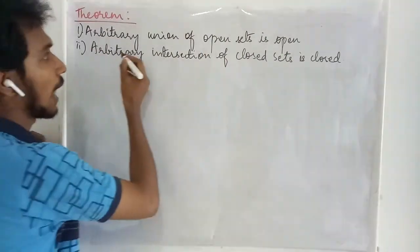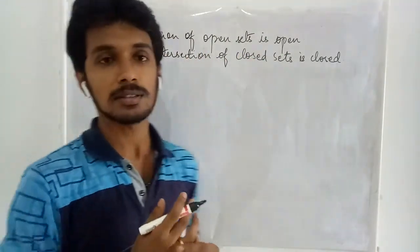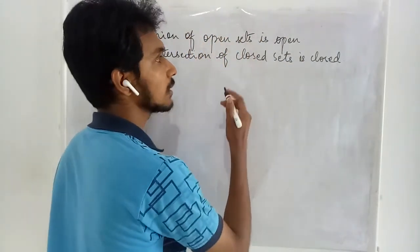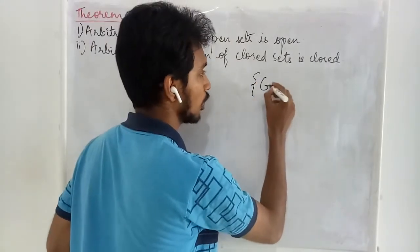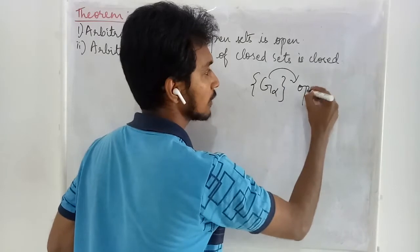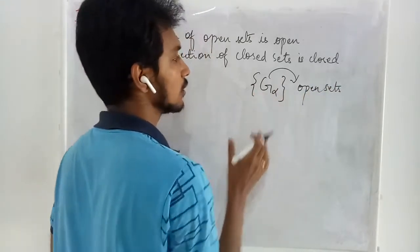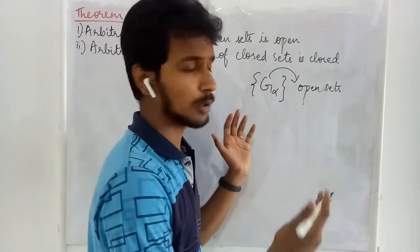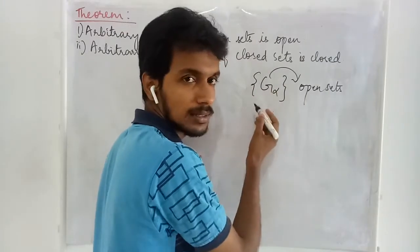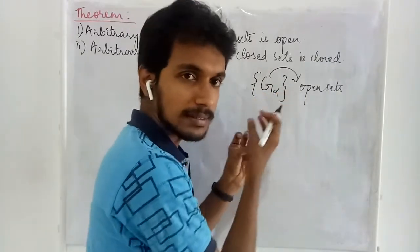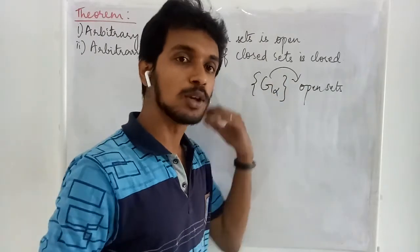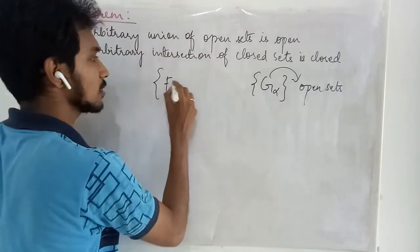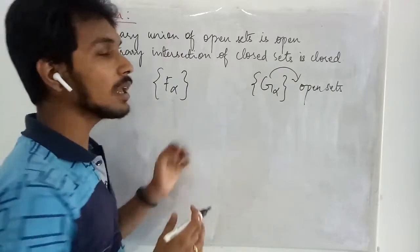The theorem states that arbitrary union of open sets is open. This means whatever may be the type of collection you are going to take — whether it is finite, countable, or any infinite collection — if you make a union of all these open sets, that union is going to be open as well. And similarly, when your collection is closed, your intersection is going to be closed.